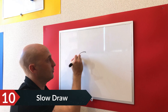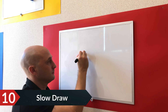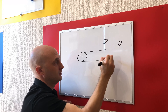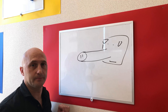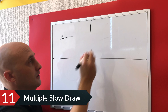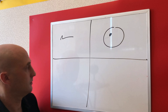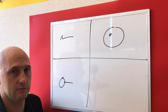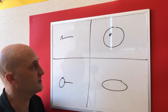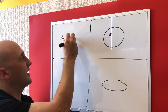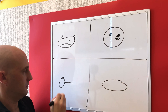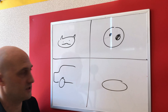Number eleven: slow draw. What's this? It's a pig. Number twelve: multiple slow draw. What's this? When a kid guesses you can finish the picture. Oh, it's a cat. Yes, it's a cat.